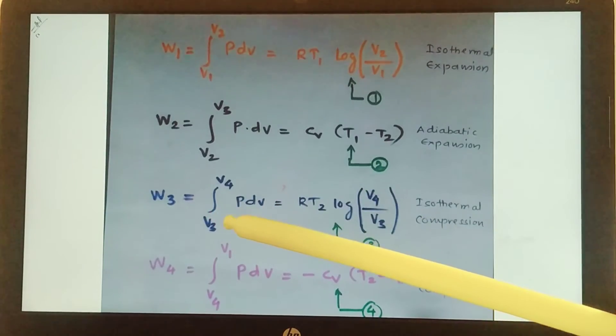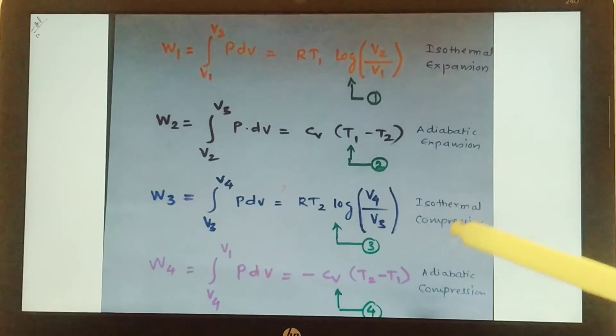W3, that is the work done during isothermal compression. What will be the work done? W3 is equal to RT2.